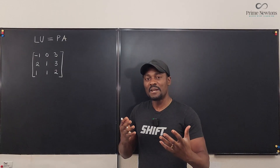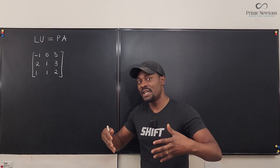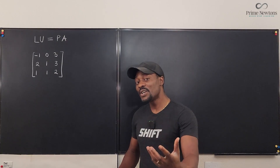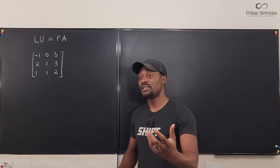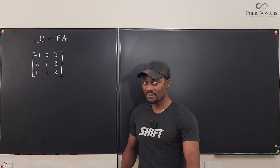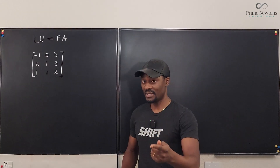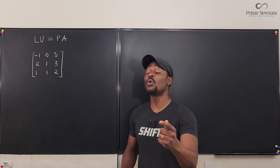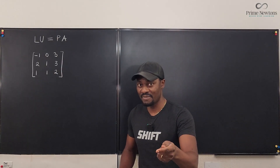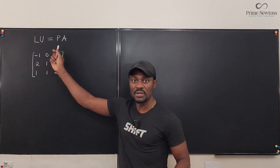I want you to look at a matrix for this video as the number 12. You could write 12 as 12 times 1, and you could also write it as 6 times 2. You could also write it as 4 times 3. That's how I want you to view this equation.